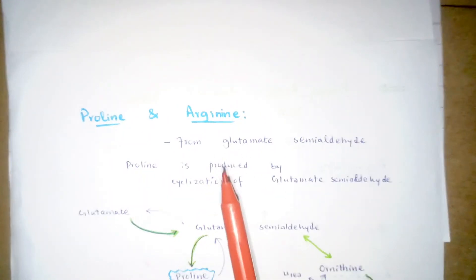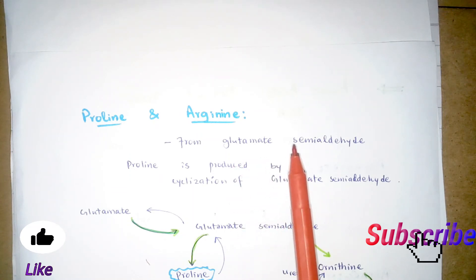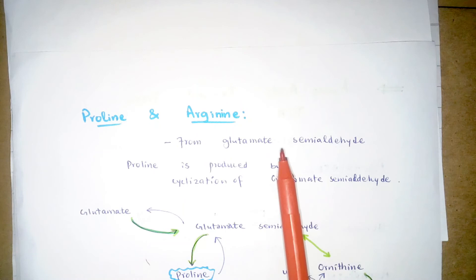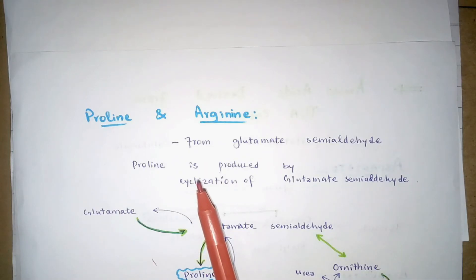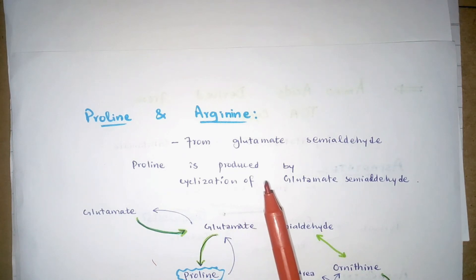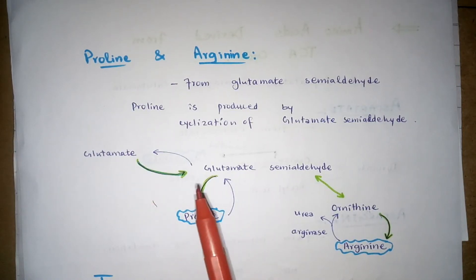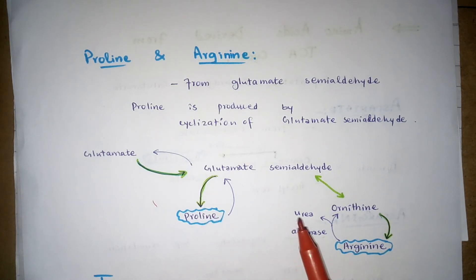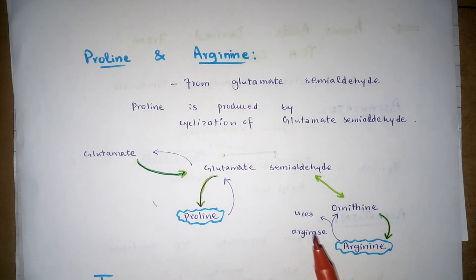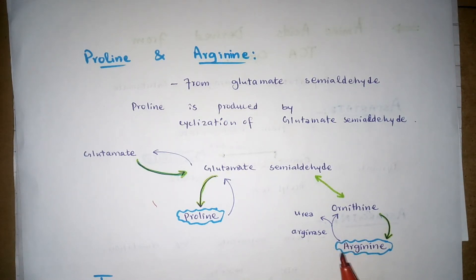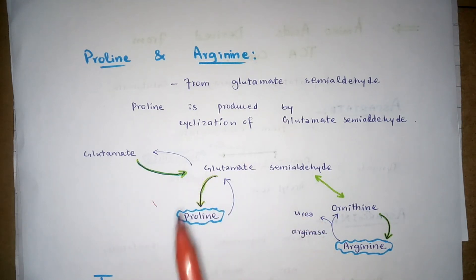Proline and arginine can be derived from glutamate semi-aldehyde, which is formed by the reduction of glutamate. Proline is produced by the cyclization of glutamate semi-aldehyde. Arginine can be derived from ornithine, which is produced by the transamination of glutamate semi-aldehyde via three reaction steps of the urea cycle. This reaction is catalyzed by the arginase enzyme.